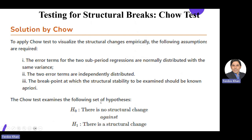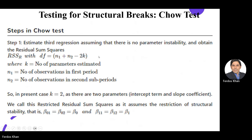The Chow test examines the following hypotheses: the null hypothesis is that there is no structural change, against the alternative that there is a structural change. If the p-value is less than 0.05 at significance level 0.05, we reject the null hypothesis and conclude that there is structural change. The significance of the test means there is a structural change — you should remember this hypothesis.